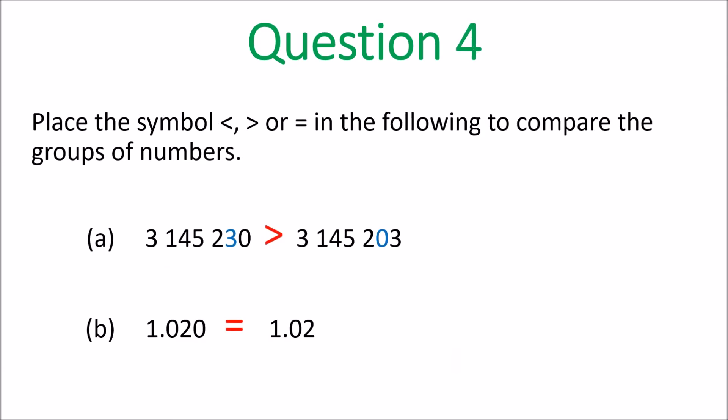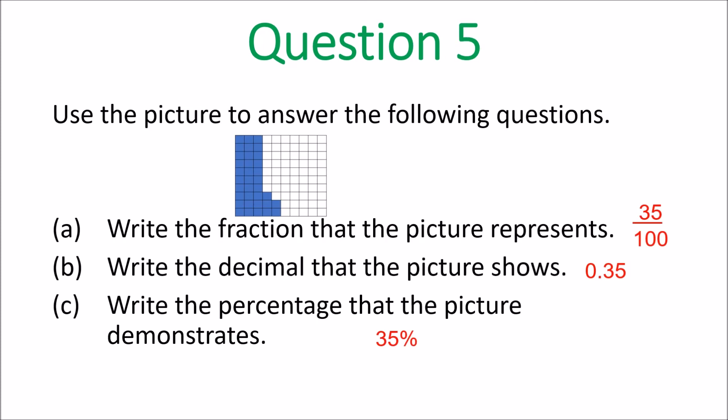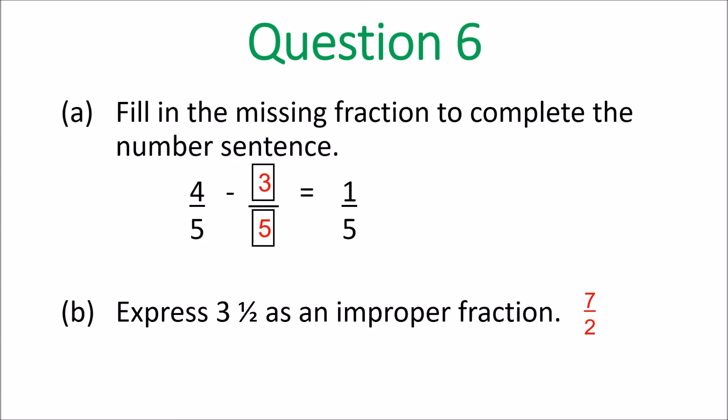Question 4. A is greater than. And then B is equal to. No matter how many zeros you put, it would be equal to. Got it? Question 5. 35 hundredths. A and then B is 0.35. And C is 35%. That's question 5 done.